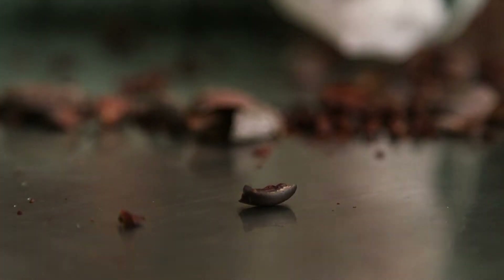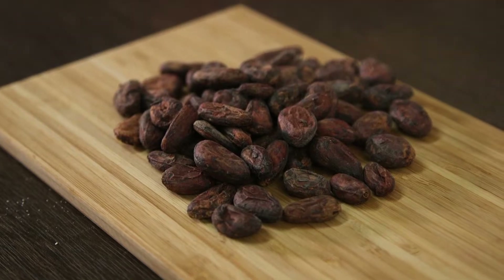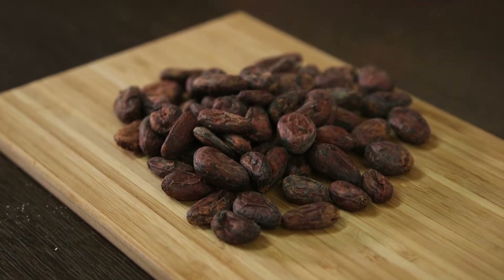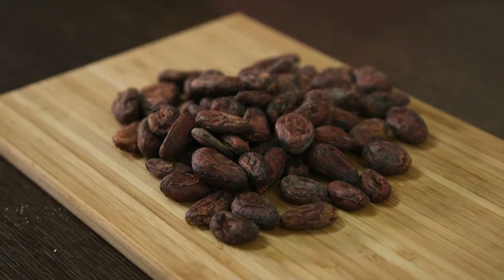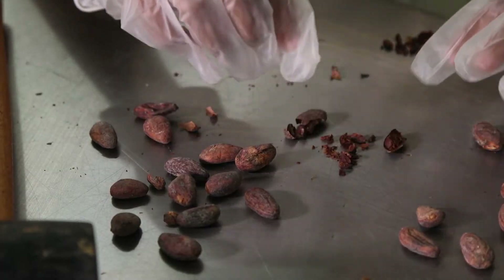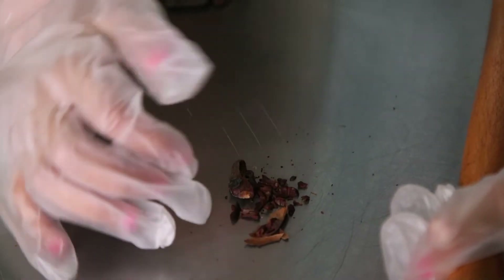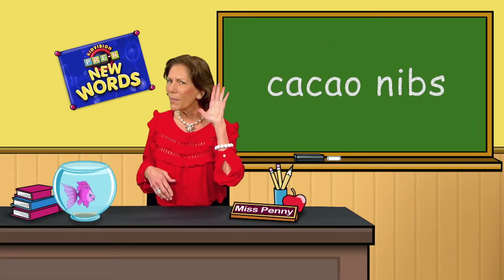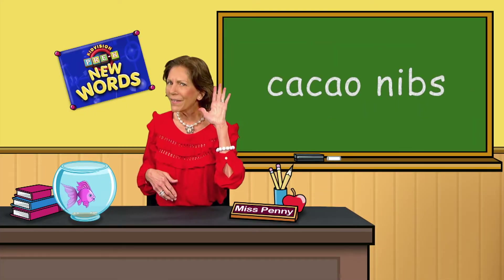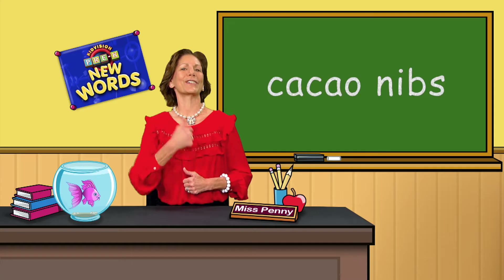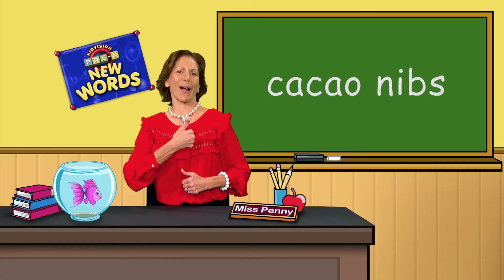Cacao nibs. Cacao nibs are small hard pieces inside the cacao husk. Nibs are chocolate in its purest form. What was that word? Cacao nibs. Good job.